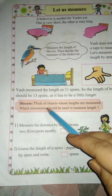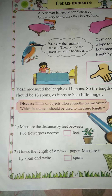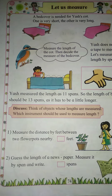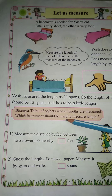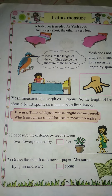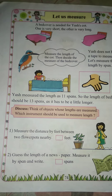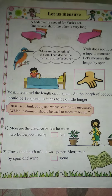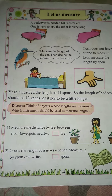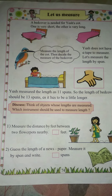Discuss: Think of objects whose lengths are measured. Which instrument should be used to measure length? We will see what kinds of things we can measure and what methods we can use.